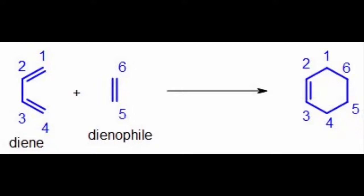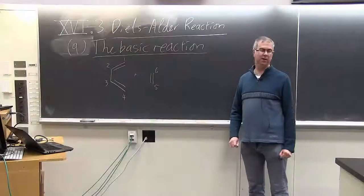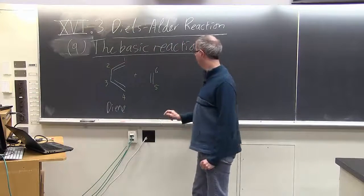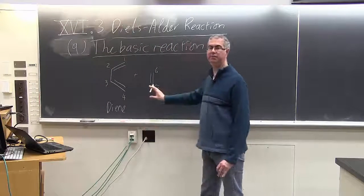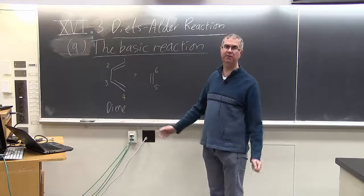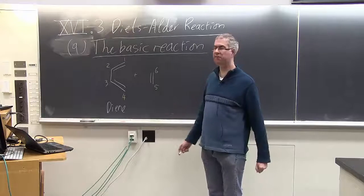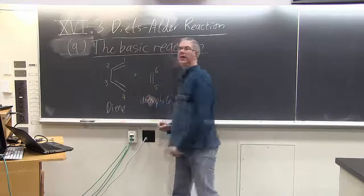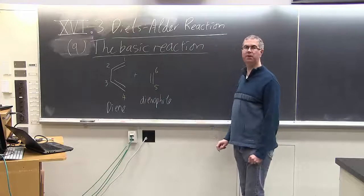So we take a diene and a dienophile. A dienophile is simply something that loves dienes, so these are just two things that react together, and we form a new six-membered ring.